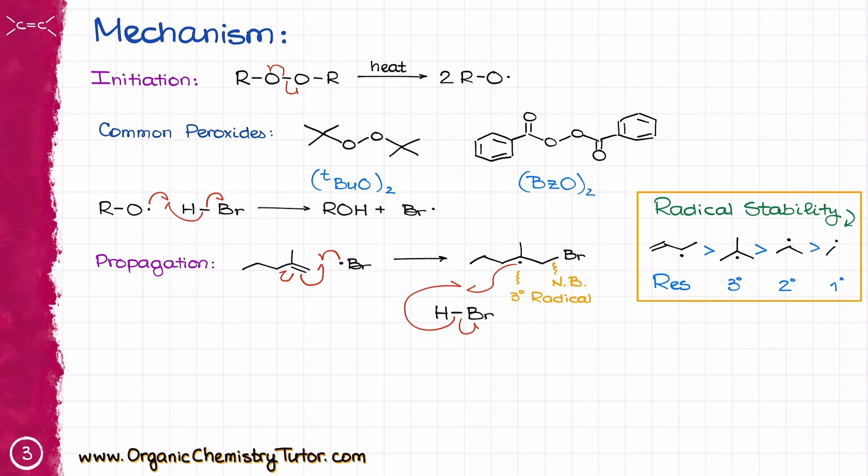So next step, our organic radical is going to grab a hydrogen from another molecule of HBr floating in our system. This is going to generate the Br radical that can go back into another round of the propagation cycle, so this way we are going to create one continuous cycle that keeps on going for as long as we have fuel for that. And of course, we are also going to be making our final product.